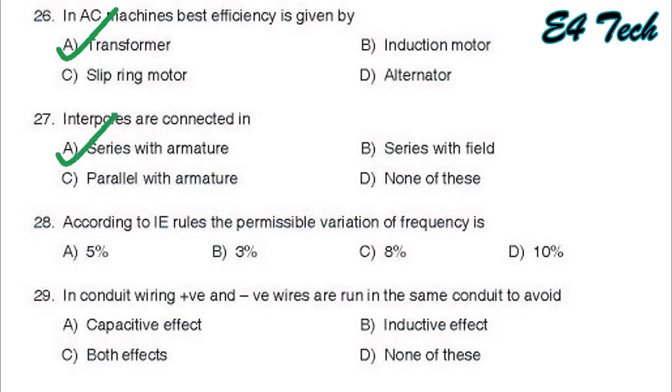Next, according to IE rules, the permissible variation in frequency. Permissible variation in frequency is maximum 3%. That is option B.